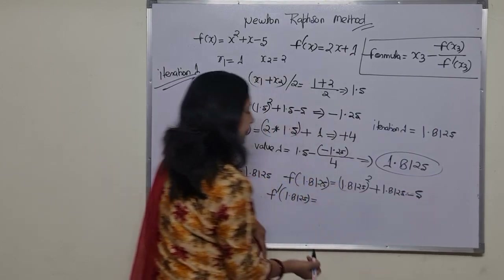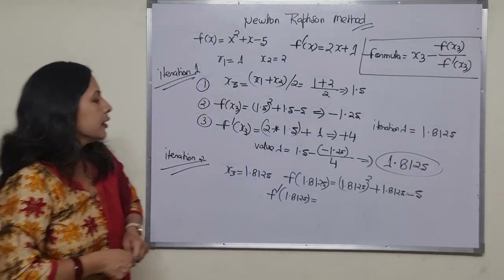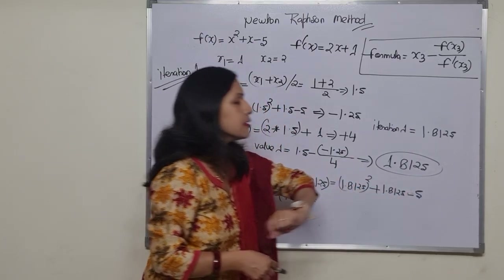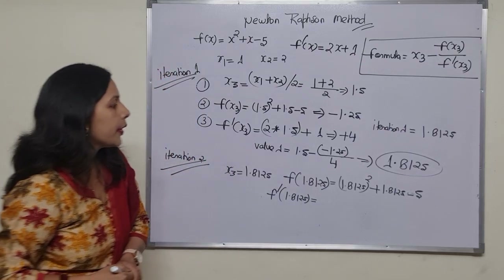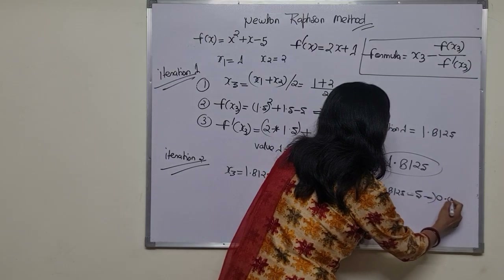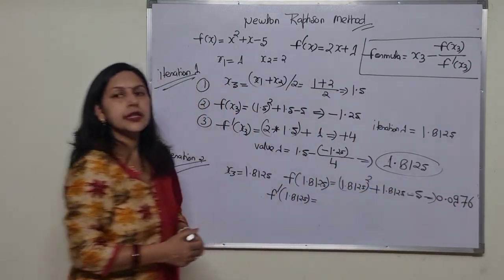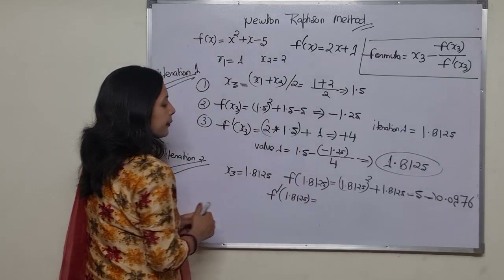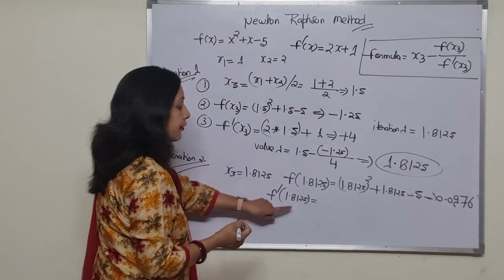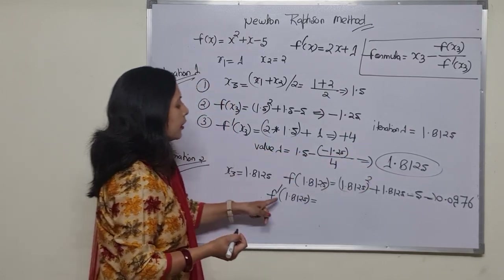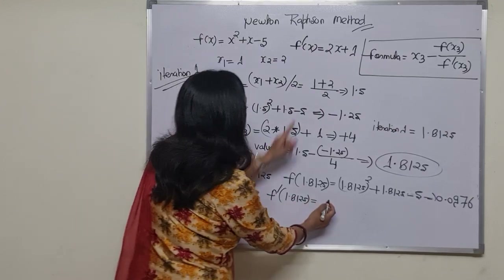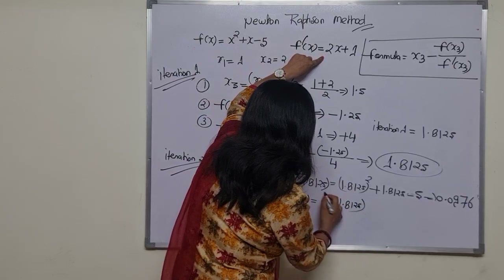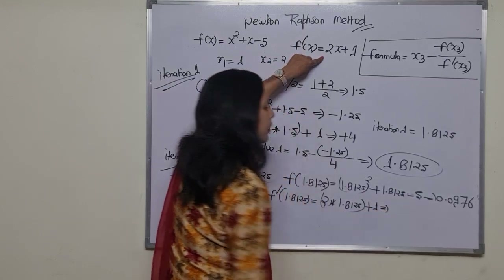Solving 1.8125 squared plus 1.8125 minus 5, we get f(x3) equals 0.0976. For f'(x3), we put 1.8125 into the differentiation equation: 2 into 1.8125 plus 1.